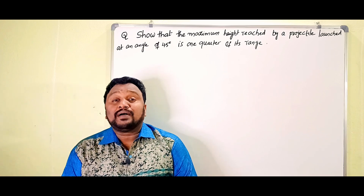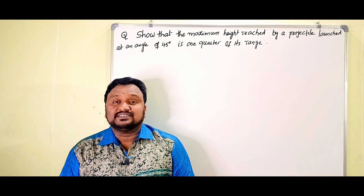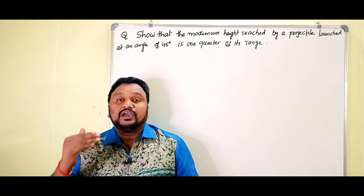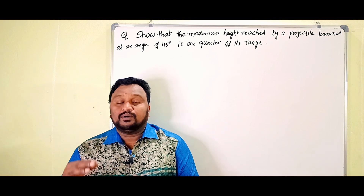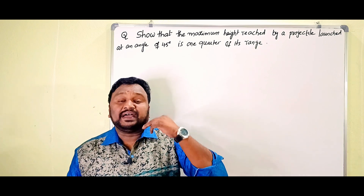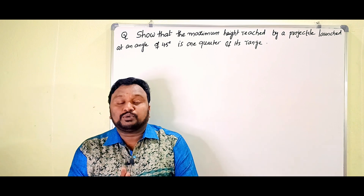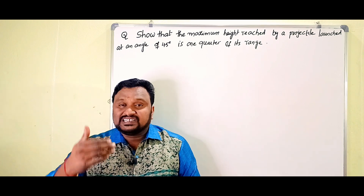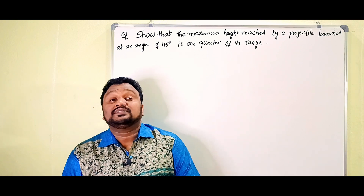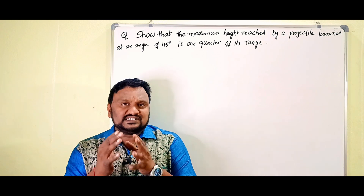Hi dear friends, welcome back to our channel Anand Kumar Basics of Physics — this is the right place to learn. In this video we are going to discuss another most important question regarding the maximum height and range of a projectile. We have to prove that the maximum height of a projectile is one quarter of the range when the angle of projection is 45 degrees.